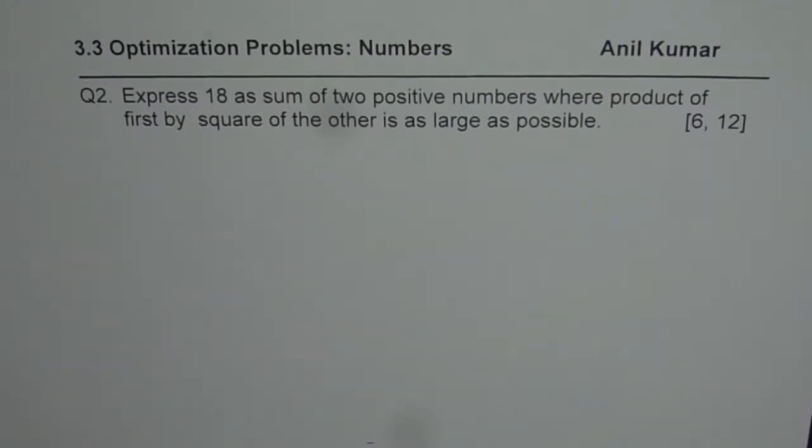Express 18 as sum of 2 positive numbers where product of first by square of the other is as large as possible.